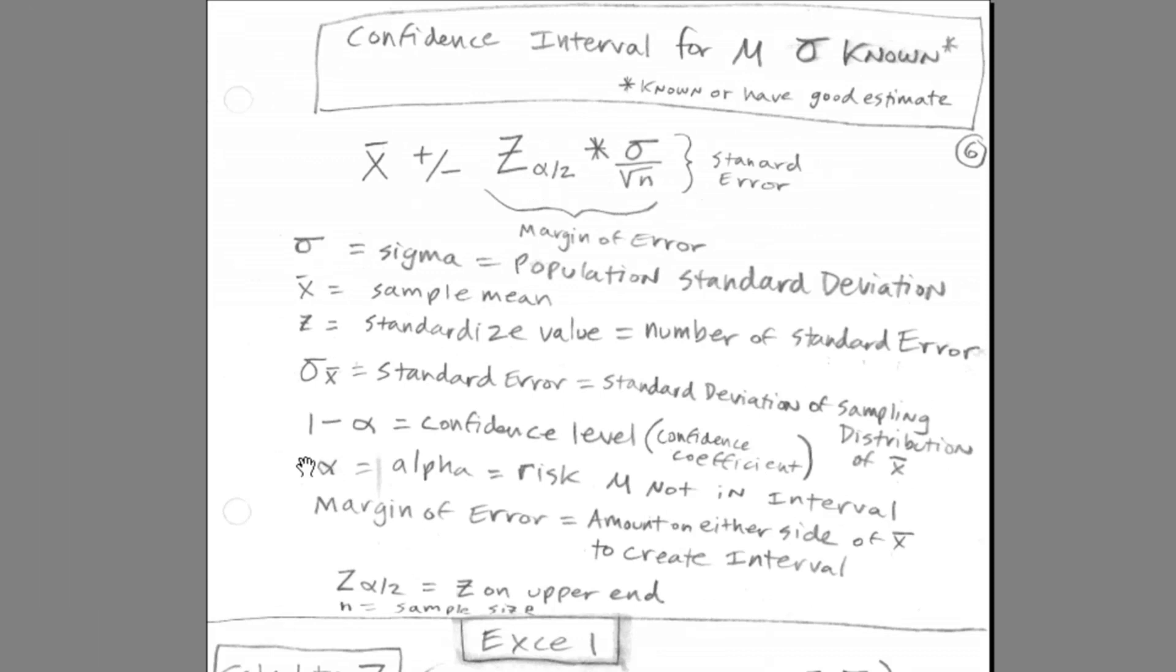So that's z on the upper end. There's all the definition. Notice, they define confidence level as 1 minus alpha. That's because alpha is the risk, mu not in the interval. So usually, you think about your risk up front, and then you take 1 minus that to get your confidence level. That means how sure you are the population parameters within your interval.